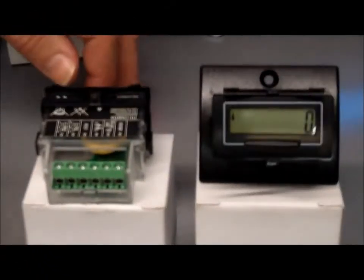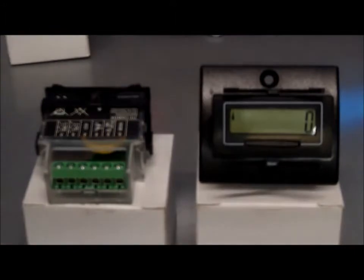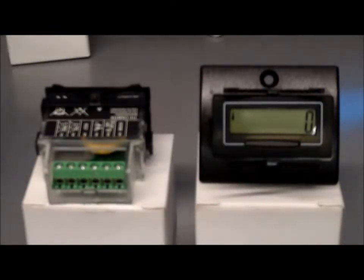The Trumeter 7-triple-1 counter comes in three models. There's the basic model which takes a contact closure input, which is a 7-triple-1. There's the 7-triple-1HV which accepts a voltage input up to 240 volts. So if you're switching a machine on and off and you want to count the number of times that occurs, that can be the sort of counter used there.